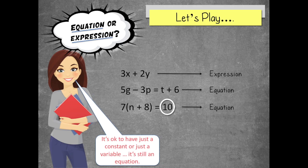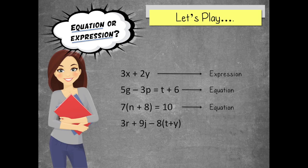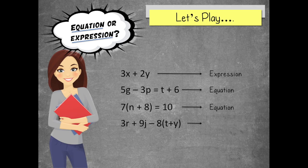One more. How about 3r plus 9j minus 8 times t plus y. Yeah, that's complicated, but it's still just an expression. I think you get the idea.